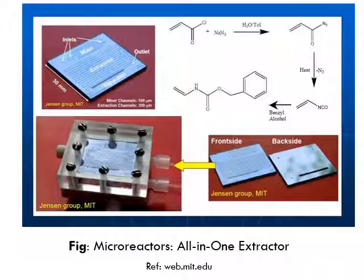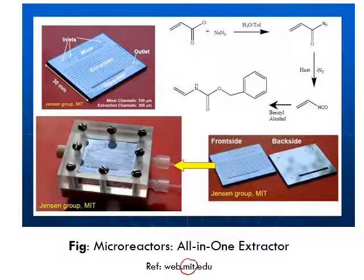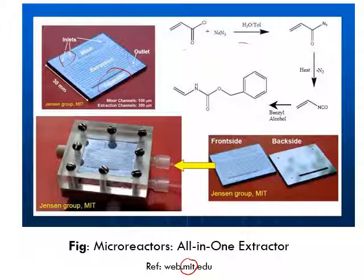Let's take an example of a micro-reactor from MIT — Massachusetts Institute of Technology, one of the best engineering universities in the world. They have a microprocessor where a chemical reaction takes place on a micro-reactor. You can see there is an inlet at the beginning, then a mixture, an extractor where the reaction takes place, a small separator, and then an outlet.